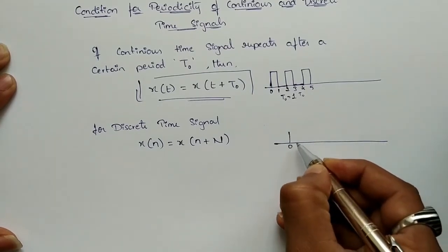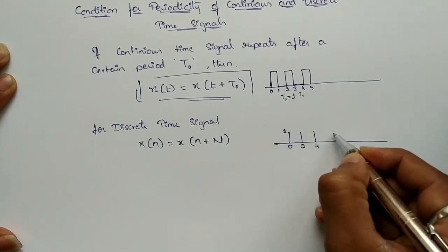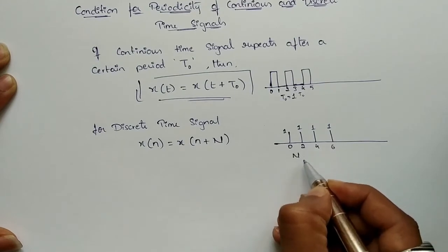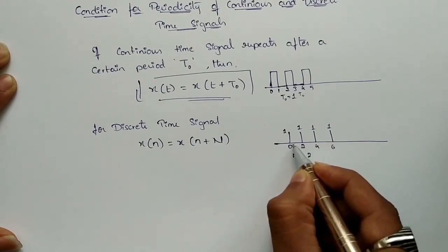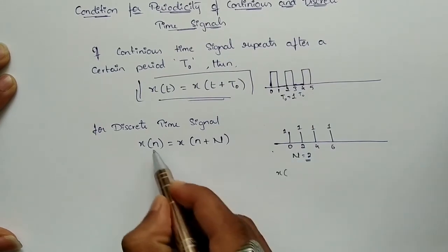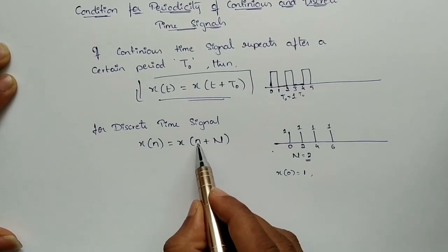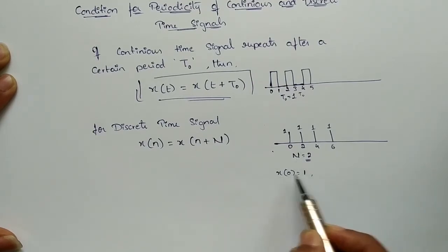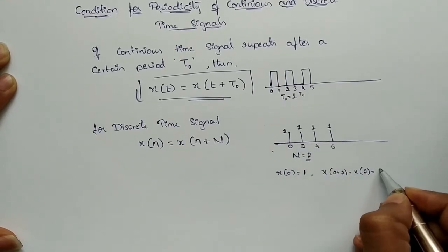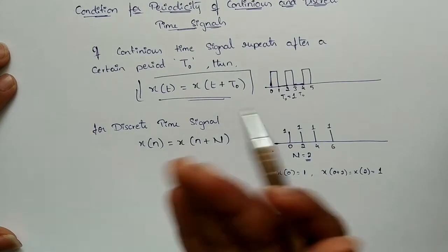For example, if a discrete time signal starts at zero with amplitude one, repeats at two, again at four, and again at six — the signal repeats after a duration N = 2. From zero to two there is a gap of two. Substituting n = 0: x[0] has amplitude one, and x[0 + 2] = x[2] also has amplitude one, confirming x[n] = x[n + N].